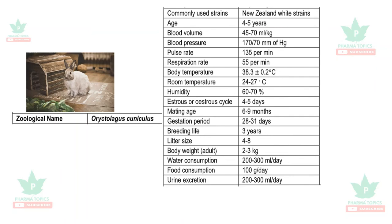The most commonly used strain is New Zealand White. The lifespan is four to five years, blood volume is 45 to 75 ml per kg, body temperature is 38.3°C, and estrus cycle is four to five days. Gestation period is 28 to 31 days and litter size is four to eight per pregnancy. Water consumption is 200 to 300 ml per day, food consumption is 100 grams per day, and urine excretion is 200 to 300 ml per day. The feed includes grass, carrot, Bengal gram, wheat bran, etc.